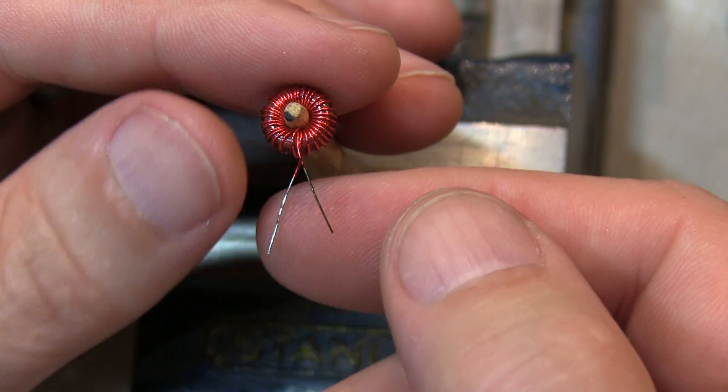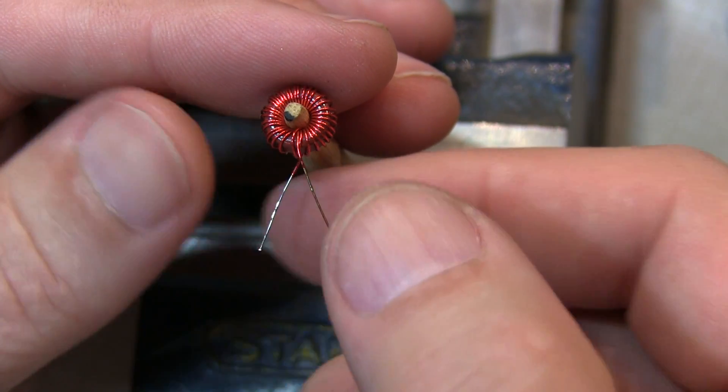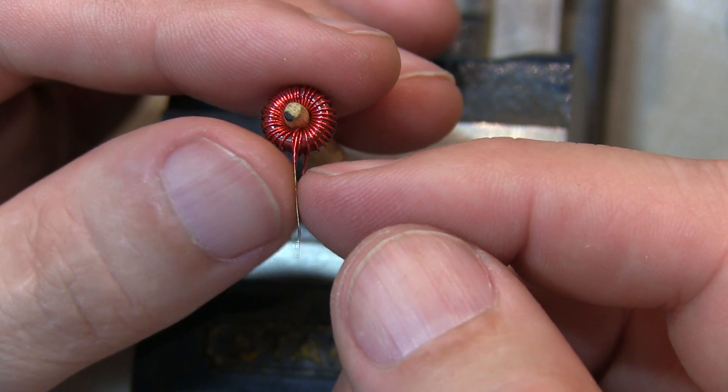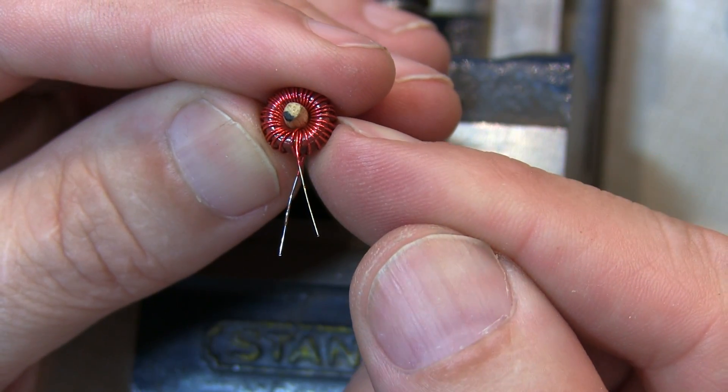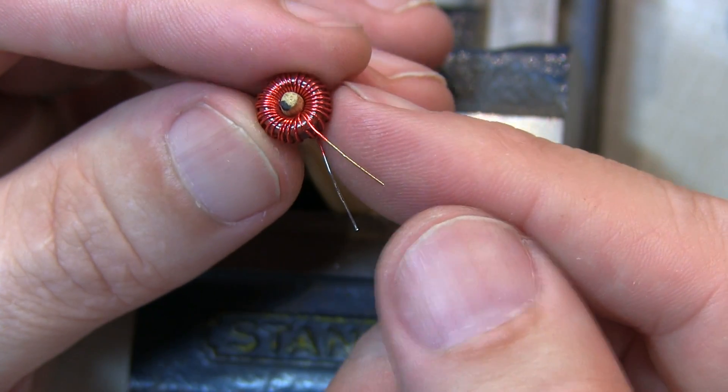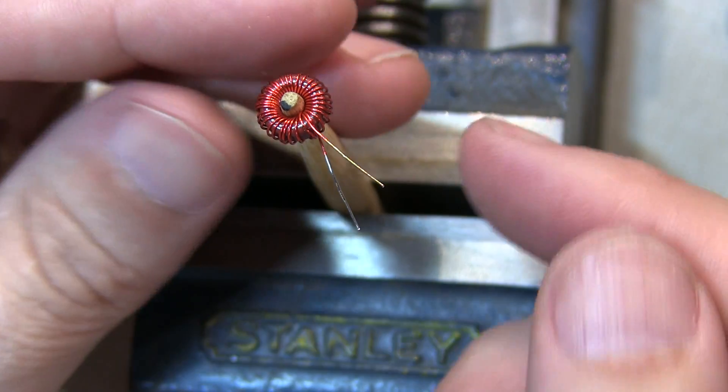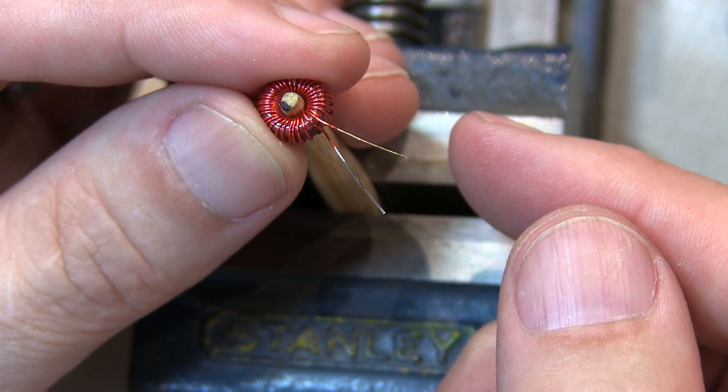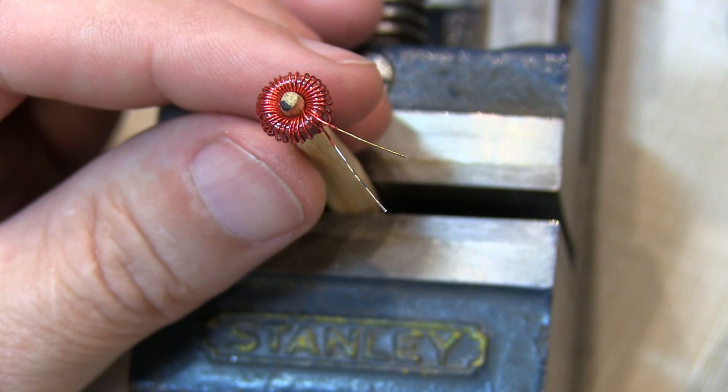Alright, with the toroid wound and both of the wires tinned with the epoxy coating taken off, we can optionally go and measure this inductor to be sure it measures appropriately. It will also give us a verification that we got the number of turns on here correct.